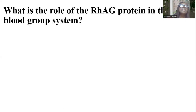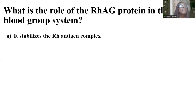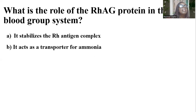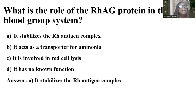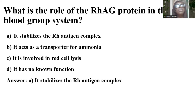What is the role of RH-associated glycoprotein in the RH blood group system? Options include: it stabilizes the RH antigen complex; it acts as a transporter for ammonia; it is involved in red cell lysis; it has no known function. And the answer is A — it stabilizes the RH antigen complex. The RH-associated glycoprotein helps to anchor the RH antigens on the red blood cell membrane.